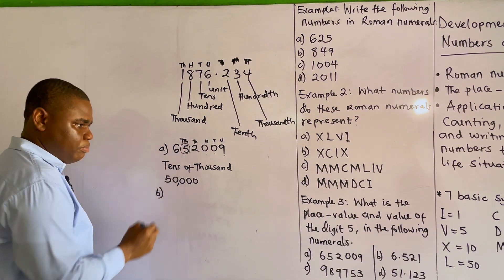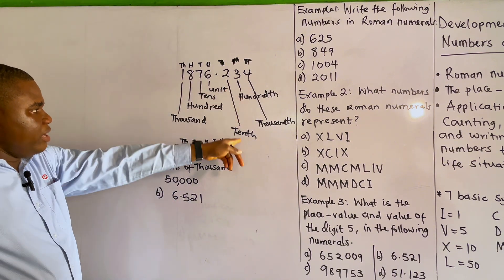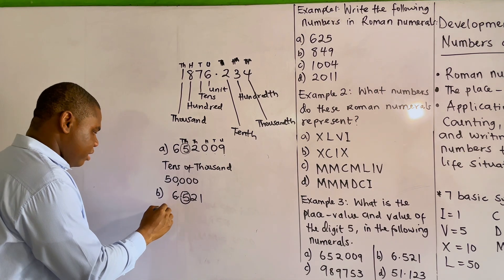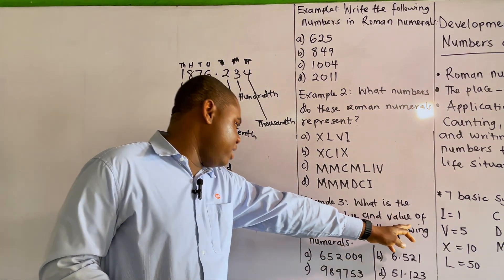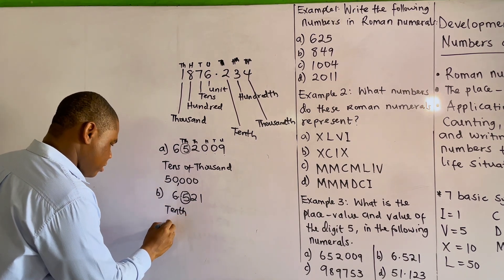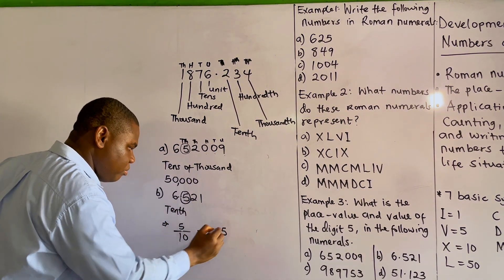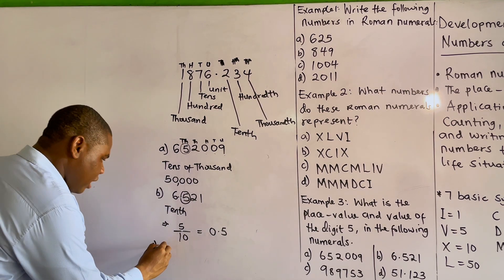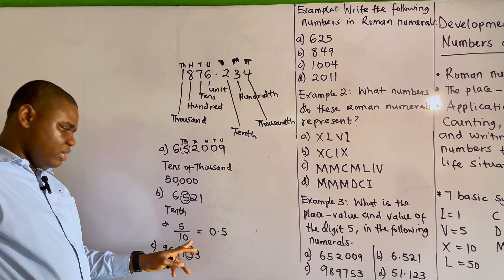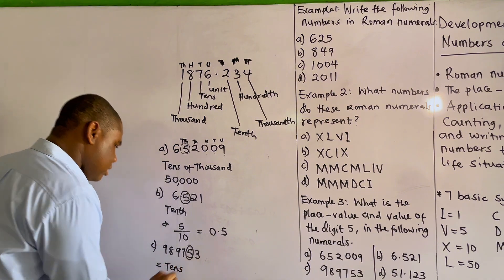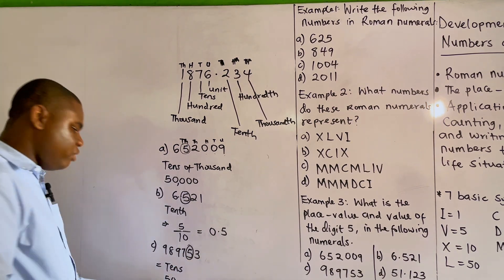Next, in 6.521, the place value of 5 is tenths, and the value of the 5 is 0.5. For 9,889,753, the place value of 5 is tens, and the value is 50.